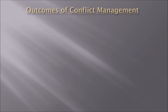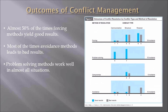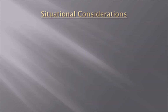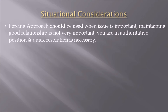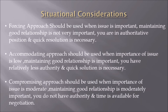Outcomes of conflict management: almost 50% of the time forcing methods yield good results; most of the time avoidance methods lead to bad results; problem-solving methods work well in almost all situations. Situational considerations: the forcing approach should be used when the issue is important, maintaining good relationship is not very important, you are in an authoritative position, and quick resolution is necessary. The accommodating approach should be used when importance of issue is low, maintaining good relationship is important, you have relatively less authority, and a quick solution is necessary. The compromising approach should be used when the issue is moderately important, maintaining a good relationship is moderately important, you do not have authority, and time is available for negotiation.